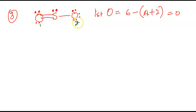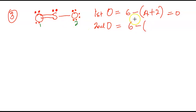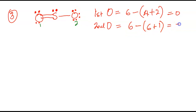Oxygen always wants to have two lone pairs and two bonds, and whenever you see it having two lone pairs and two bonds, automatically the formal charge is going to be zero. Now let's go to the second oxygen. The second oxygen — again, oxygen is in group six. This will be six minus. The number of dots here is two, four, six — six dots — plus how many bonds does it have? One. Six plus one is seven. Six minus seven is going to give us negative one. So the formal charge on this oxygen atom is negative one.